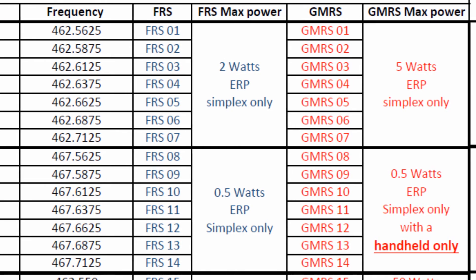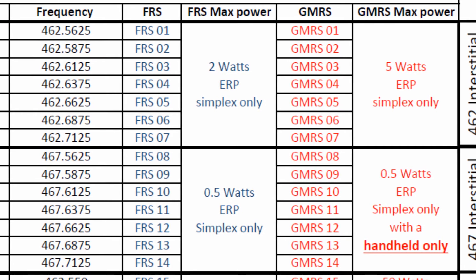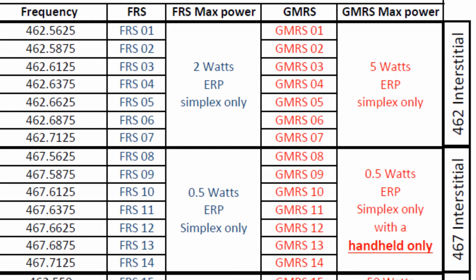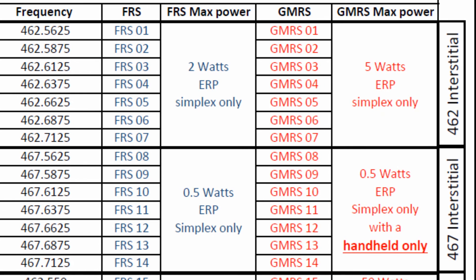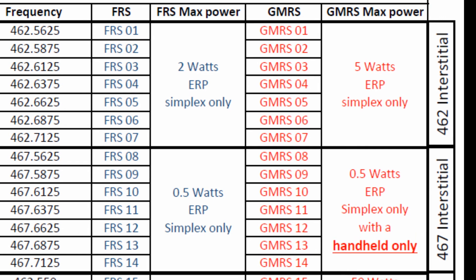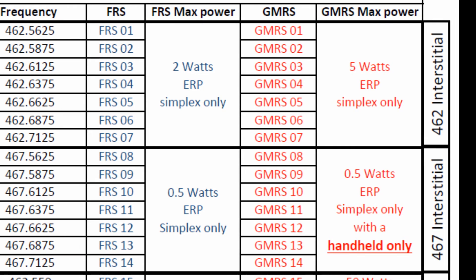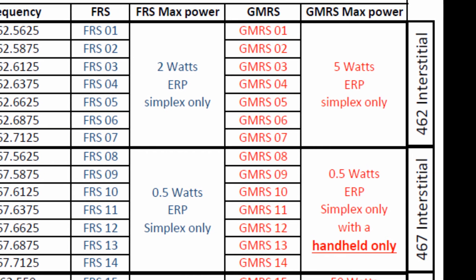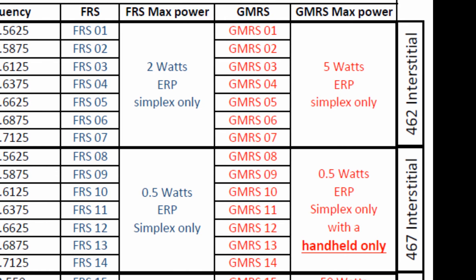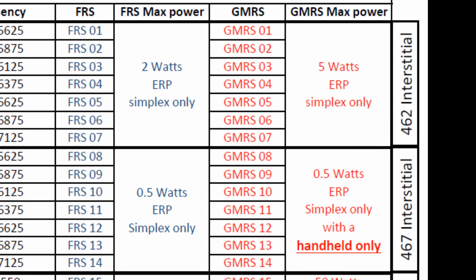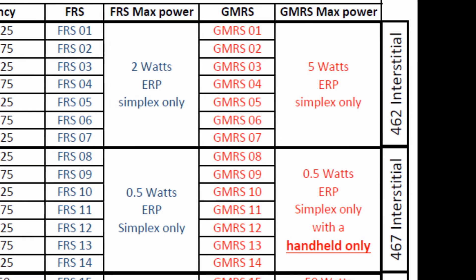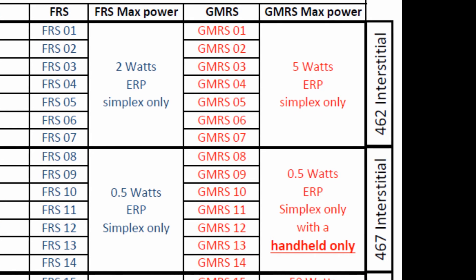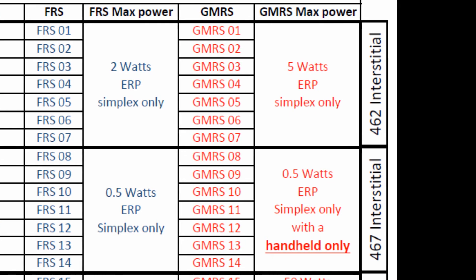How would we use this? If you were only going to be communicating at close range and channels 1 through 7 had a lot of users, go use channels 8 through 14 — because no one is going to be able to transmit at higher power, so you're more likely to get less interference or no interference from others.